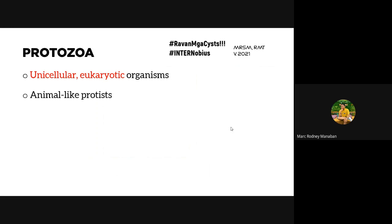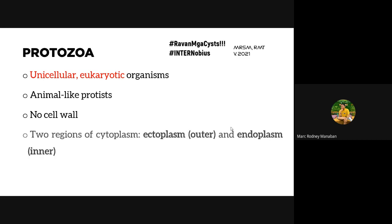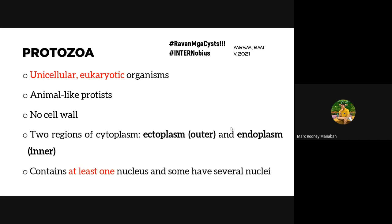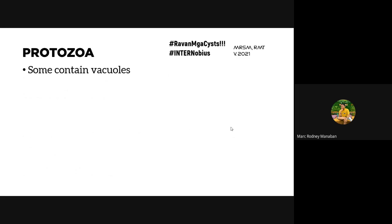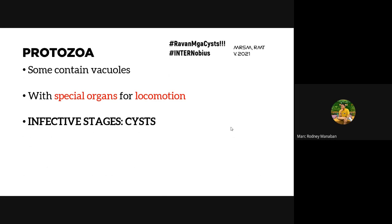Protozoa are animal-like protists — eukaryotic with all necessary organelles, no cell wall, and two cytoplasmic regions: the ectoplasm (outer) and endoplasm (inner). They contain at least one nucleus, though some may have several depending on the type. They also contain vacuoles and have special organs for locomotion. Please take note: the infective stages for your pathogenic protozoa are your cysts.